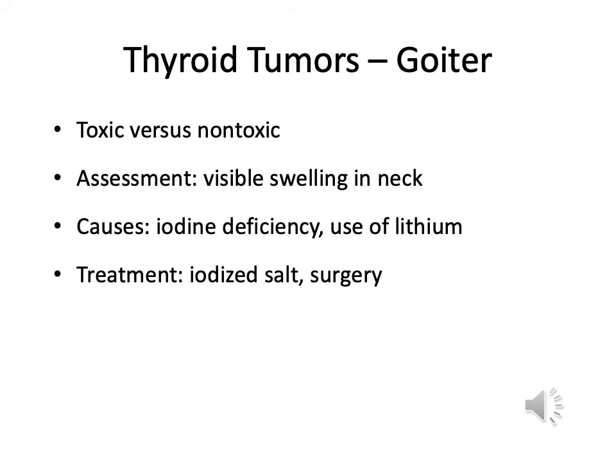One of the things we see with hyperthyroidism is a goiter. A goiter is when the thyroid enlarges so much that it starts to show exteriorly. We have to understand whether it's toxic or not toxic — a non-toxic goiter may cause no problems, while a toxic one could push on structures or inhibit breathing. Iodine deficiency and lithium are primary causes. Treatment is iodine supplementation, or surgery if it's too large.